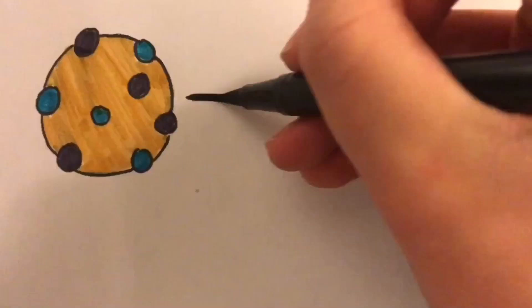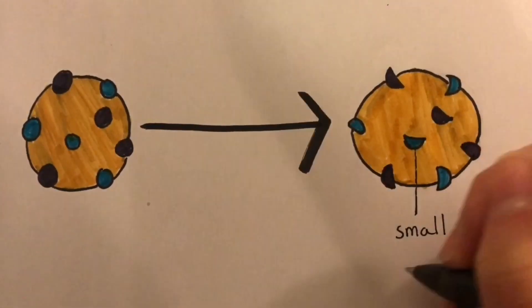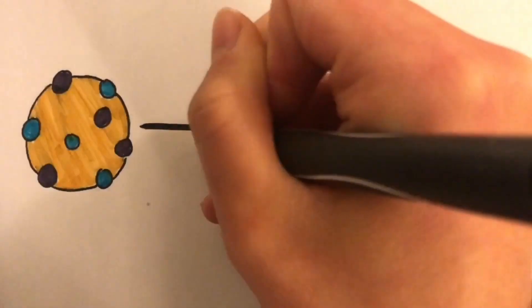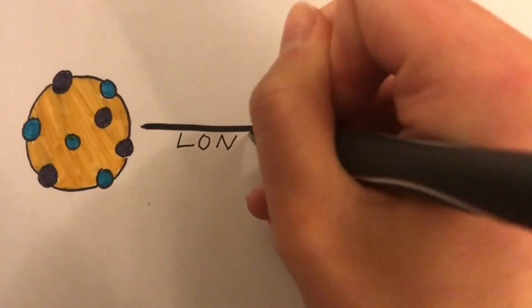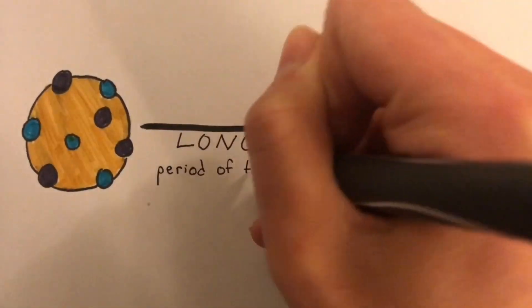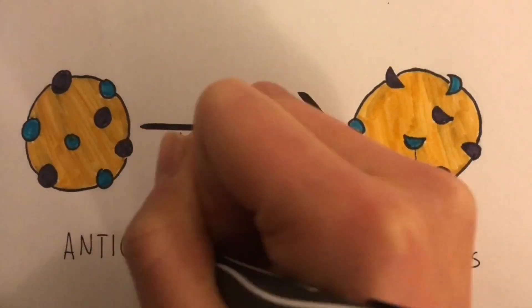Influenza is an RNA virus, which simply means that its genetic material is made up of RNA — ribonucleic acid. Unlike the genetic material DNA, RNA doesn't have a proofreading mechanism, so over time as the virus replicates and its genome gets copied over and over again, it will make small mutations which can slightly affect the antigens on the surface of the cell. This slow accumulation of slight genetic change is called antigenic drift.